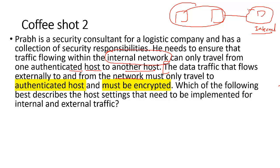The traffic flowing from the network externally must only travel to authenticated hosts and must be encrypted. This means if traffic is going from internal to external, it needs to go through authenticated hosts. Which of the following best describes the host settings? We are talking about what kind of settings need to be implemented for both internal and external traffic.